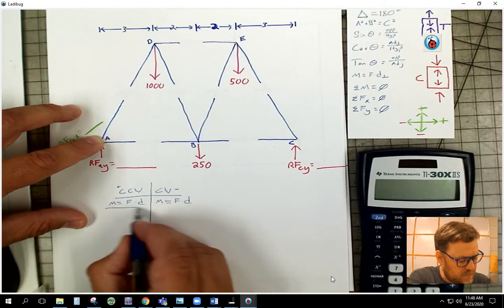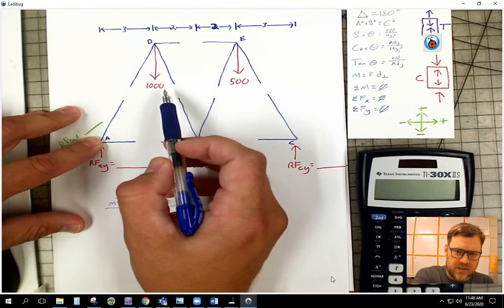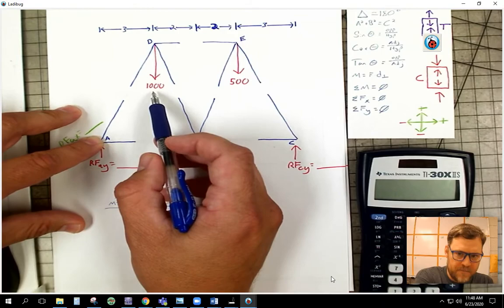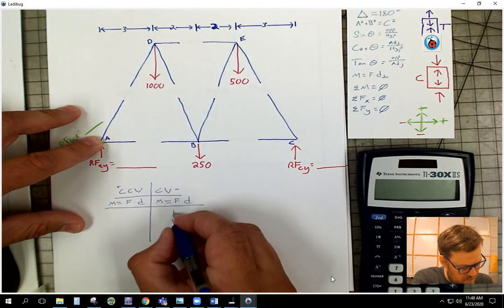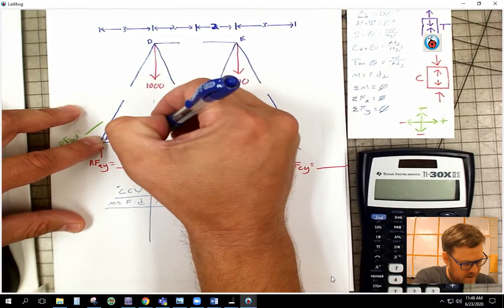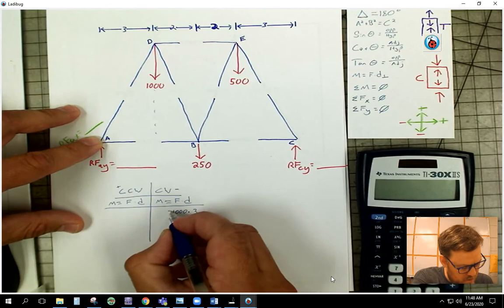I'm going to start here and I like to work right to left. I'm going to look at this first force, the force at D, and it's a thousand. It's going down, so it's going clockwise. I'm going to write 1000, and I know that distance is three feet. So if I continue this line of action, it's only three feet over to that, so my moment there is 3000.